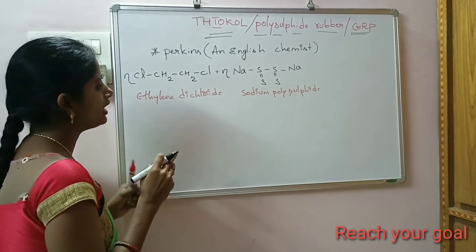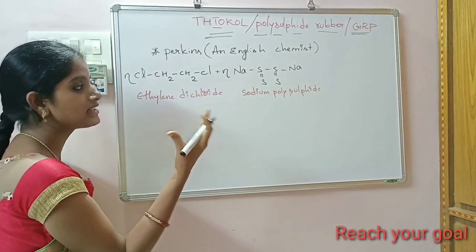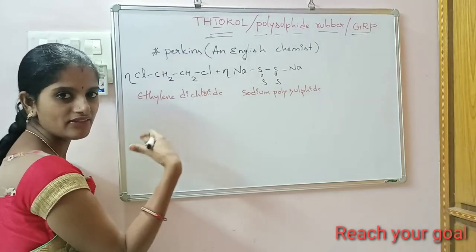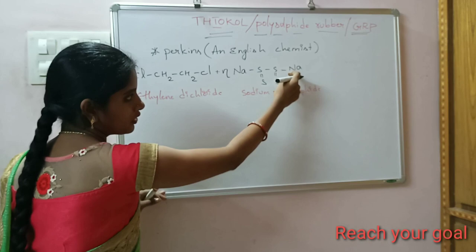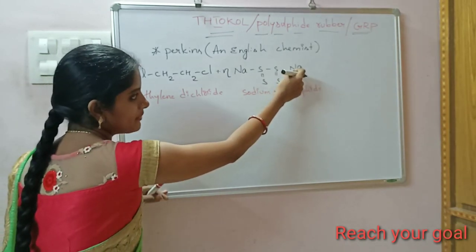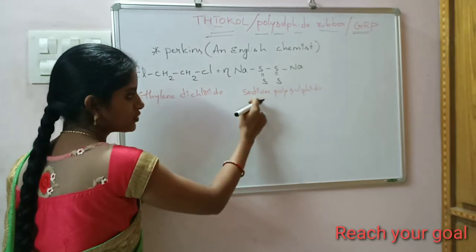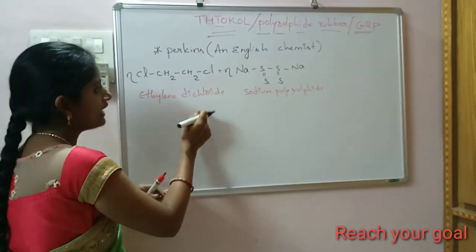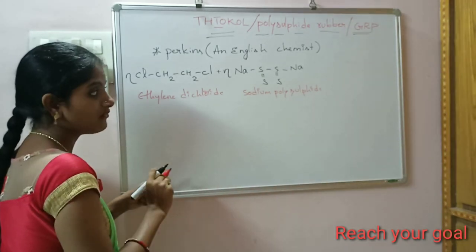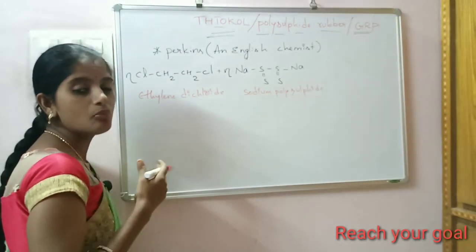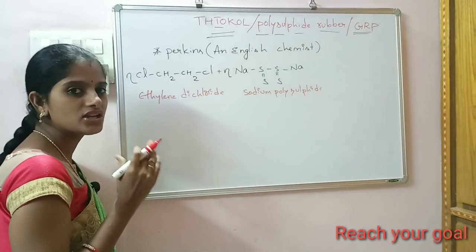Both monomers have leaving groups, that is functional groups. In sodium polysulphide, sodium is the functional group. In ethylene dichloride, chlorine is the functional group. Both are having some functional groups, and the monomeric units containing functional groups undergo condensation polymerization.